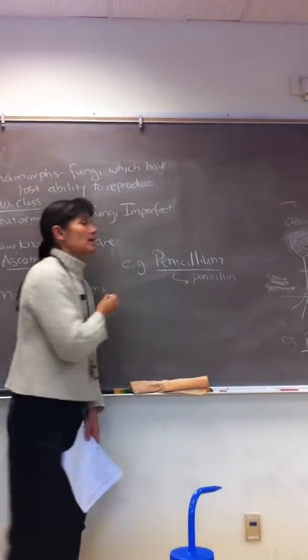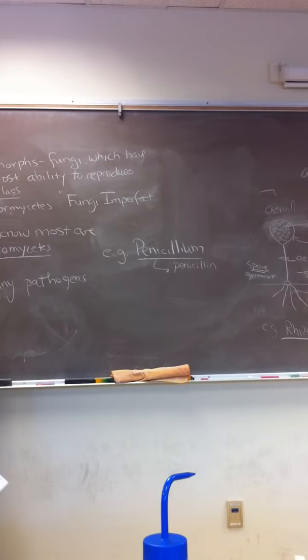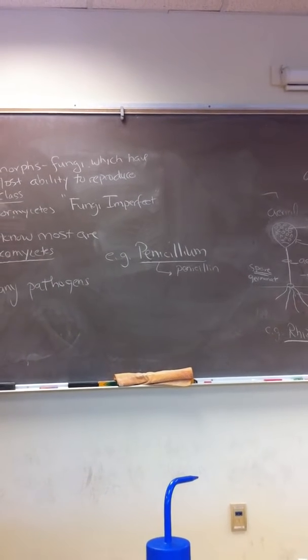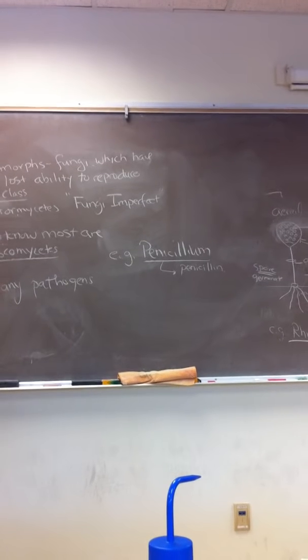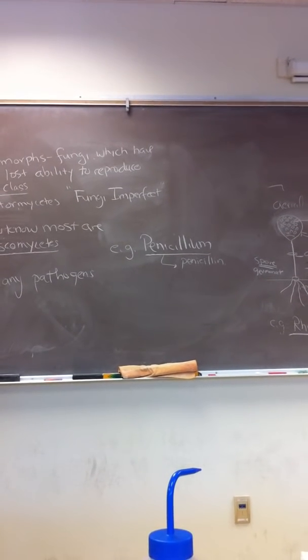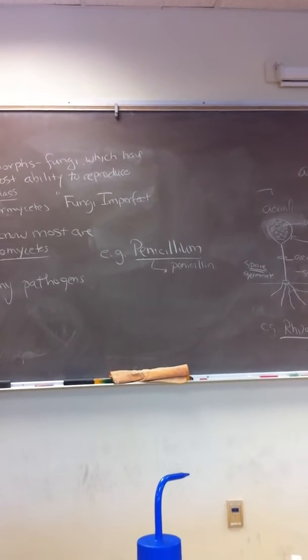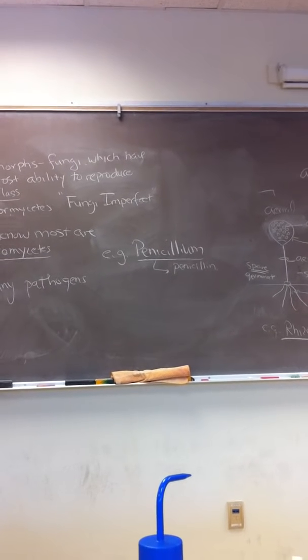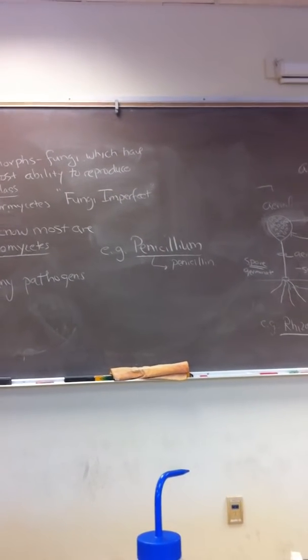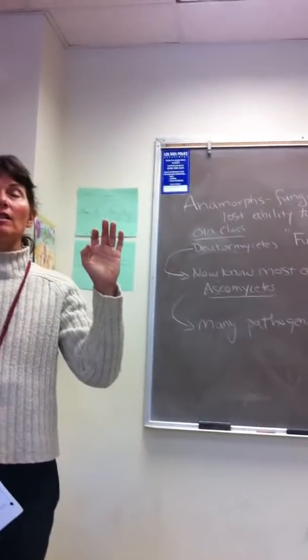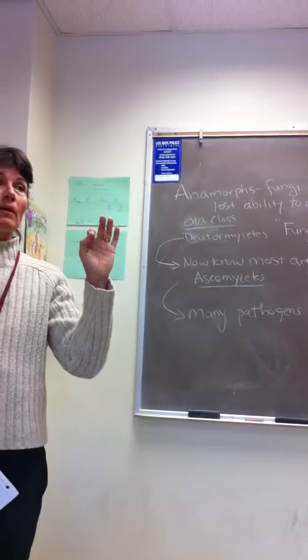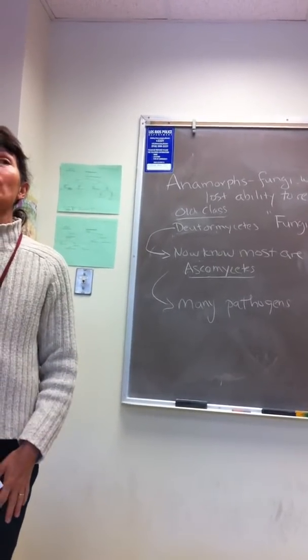We often find Penicillium growing on citrus fruit. Our kitchen is a haven for fungi. Bread's got mold on it, our oranges and grapefruits have mold on it. And what you'll see first when your grapefruits and oranges get moldy, you'll see white mycelia. And then you'll start seeing a dusty, dry, kind of turquoise, greenish-blue powder on top.